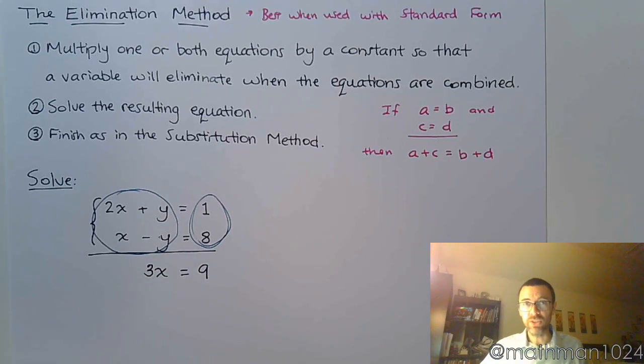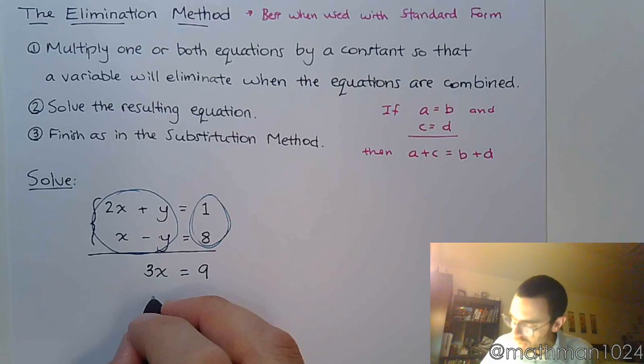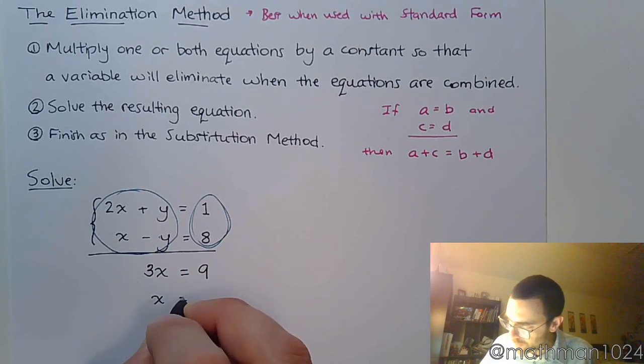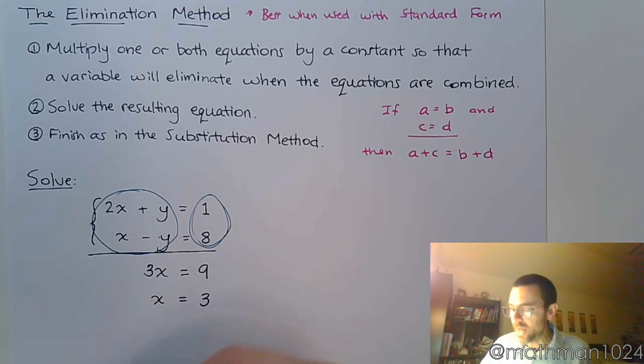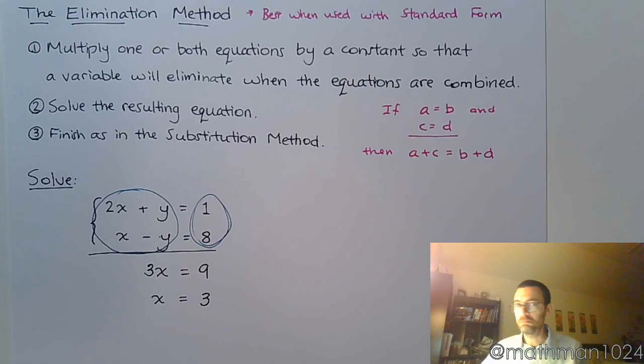So very quickly, without you really having to do anything, you have one equation with just one variable, and it's a super easy one to solve. So 3x equals 9, divide both sides by 3, and x equals 3. And there you go.